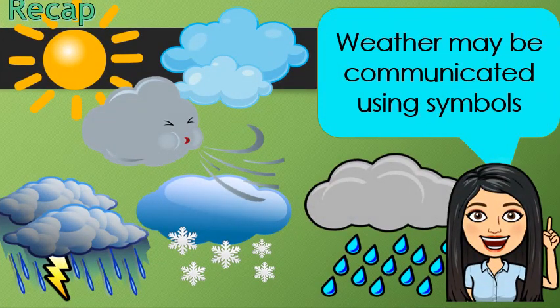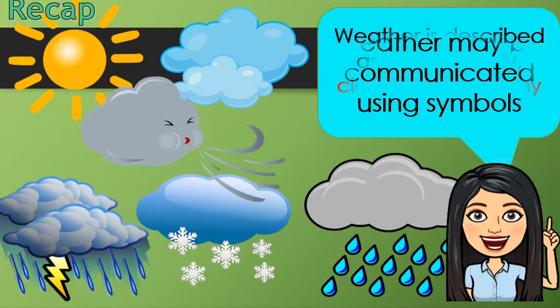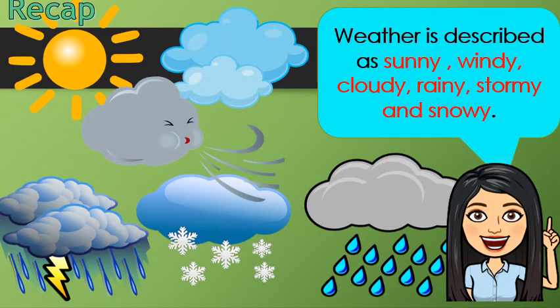We also discussed that weather may be communicated using symbols. Weather is described as sunny, windy, cloudy, rainy, stormy, and snowy.